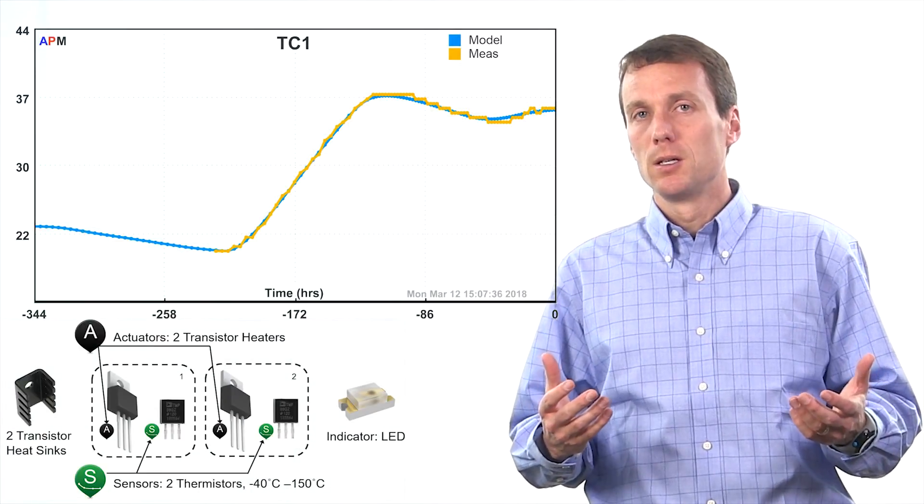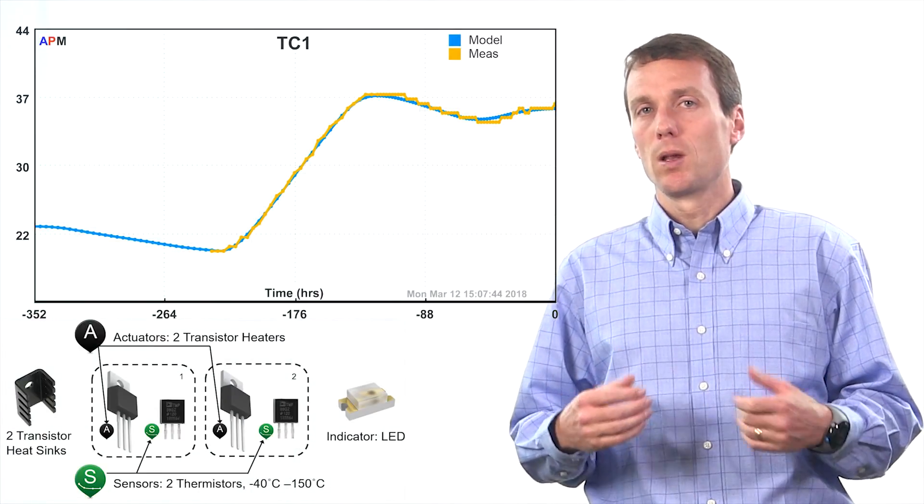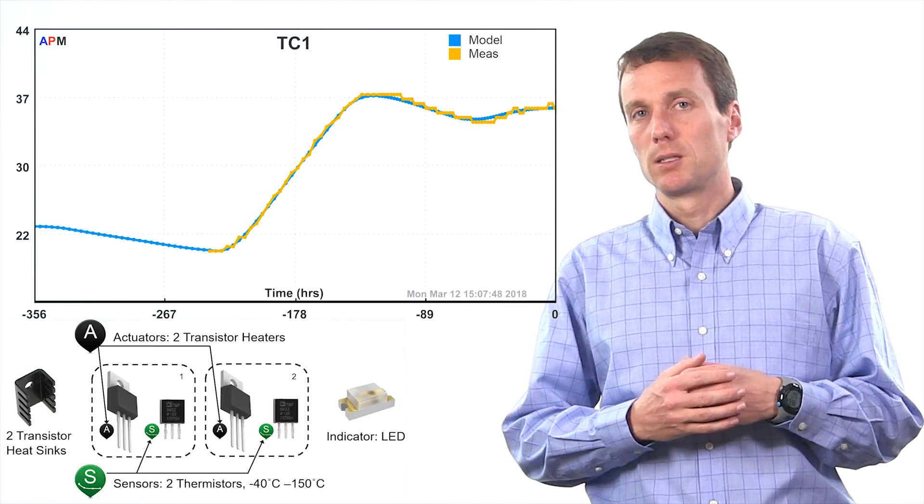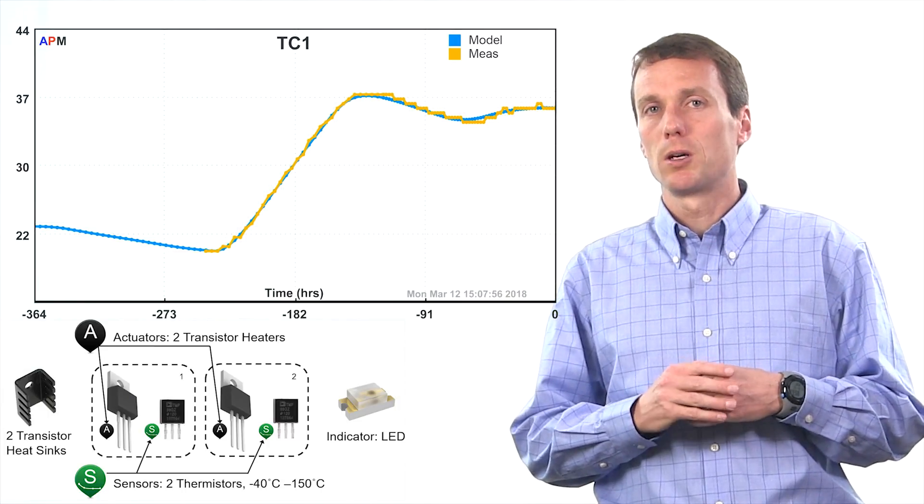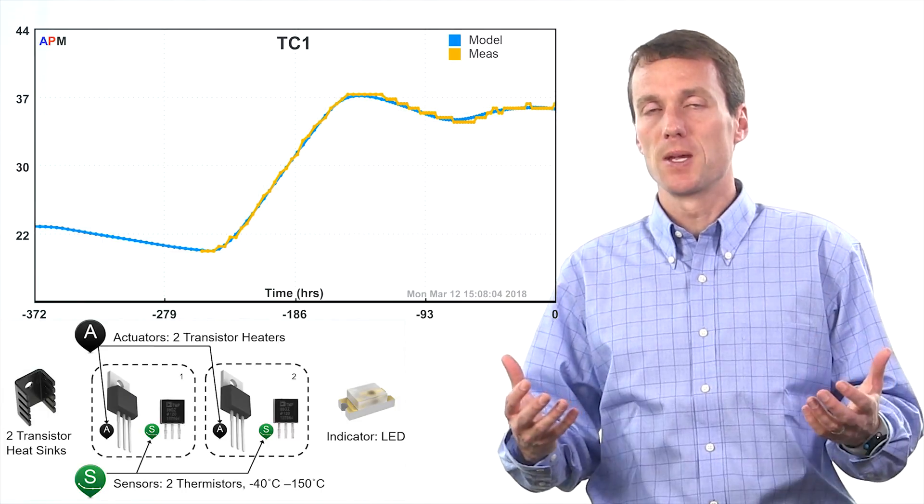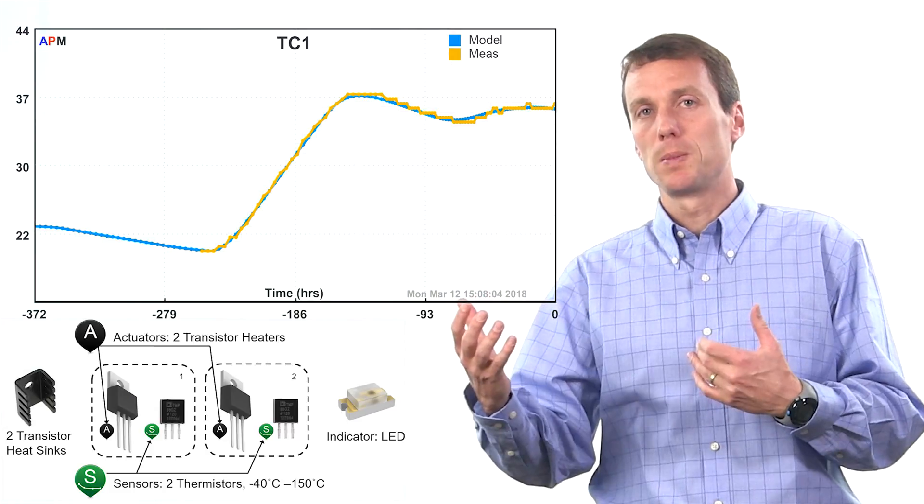Next, we're going to move on to estimation where we update some of the parameters based on the data. So we're not just trying to predict from first principles, but we're trying to update in a Bayesian estimation approach where we get an additional piece of information, we update our model.